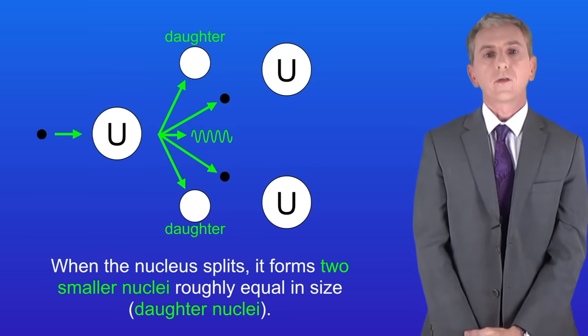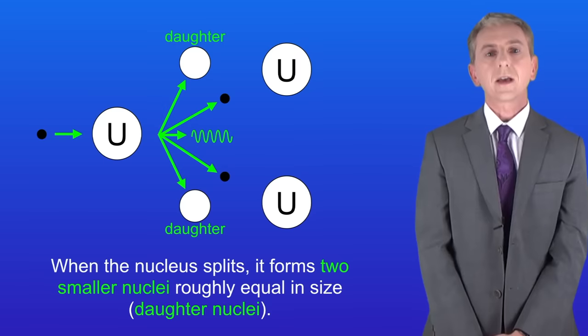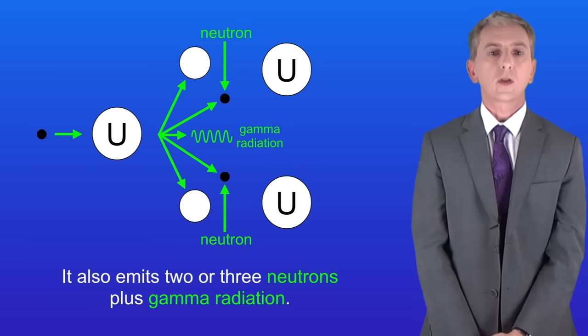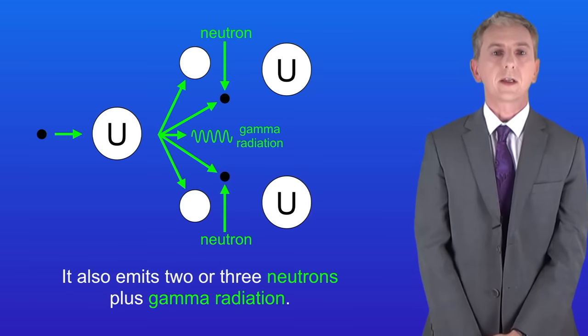When the nucleus splits it forms two smaller nuclei roughly equal in size. Scientists call these the daughter nuclei. It also emits two or three neutrons plus gamma radiation.